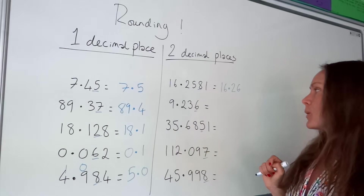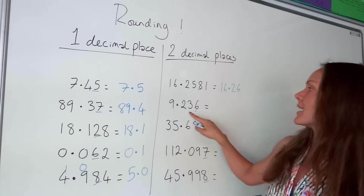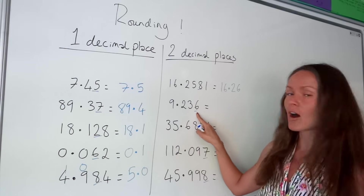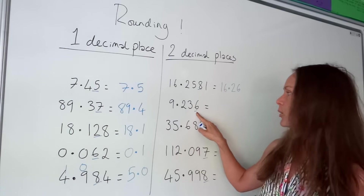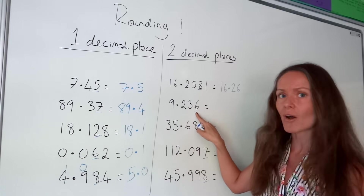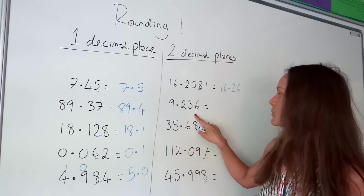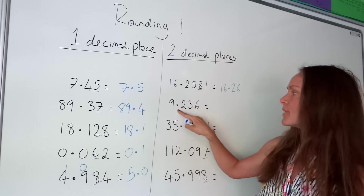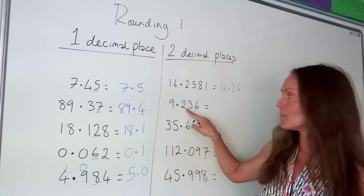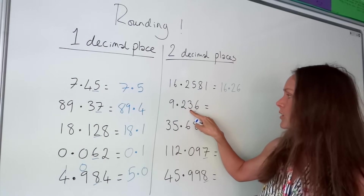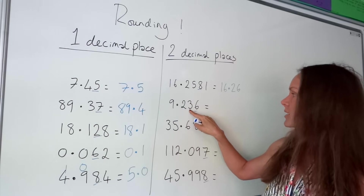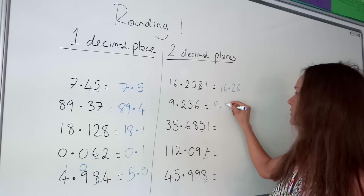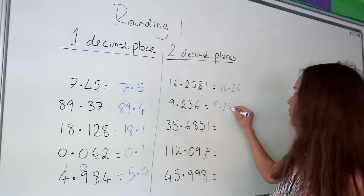This one here: again, the third number after the decimal point is bigger than 5, which means it rounds this number up. Remember, the other digits stay the same — it's only this one that moves up by 1. So we're left with 9.24.